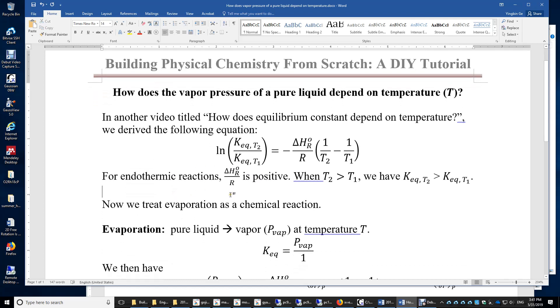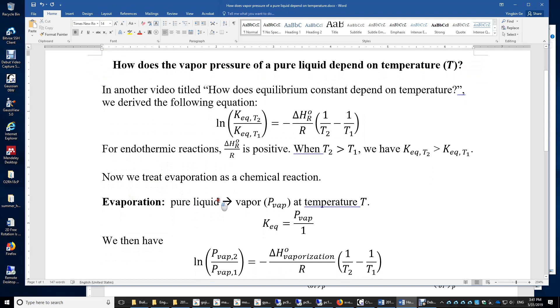Now we treat evaporation as a chemical reaction to reuse this equation. For evaporation, the reactant side is the pure liquid. The product side is the vapor with pressure Pvap at temperature T. Therefore, the equilibrium constant for this physical change is Keq = Pvap/1.